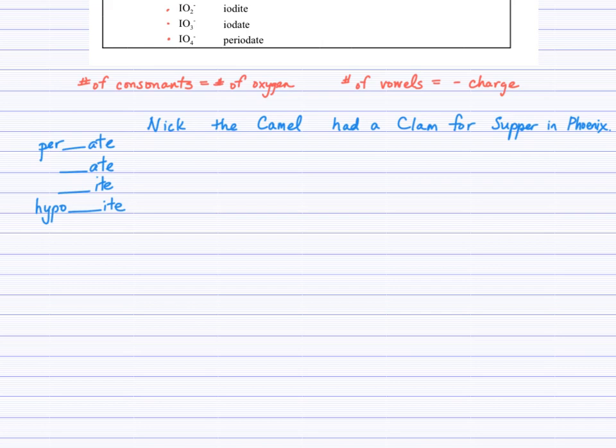We start with the first letter of the word - capital N for nitrogen coming from Nick. Now the number of consonants in Nick will tell us the number of oxygens. Remember your vowels are A, E, I, O, and U. So we're looking for letters other than A, E, I, O, or U. We have the N, the C, and the K. There's three consonants, therefore three oxygens in nitrate. Now the charge - that'll come from the number of vowels. There's an I here, so that's one vowel. So we have a negative one charge. So nitrate is NO3 negative one.